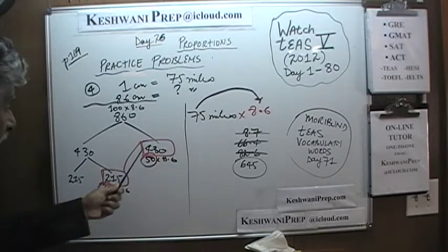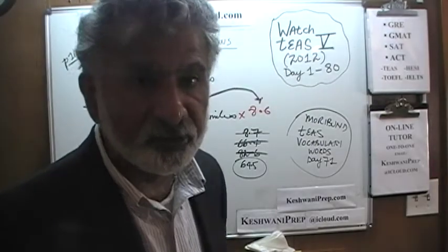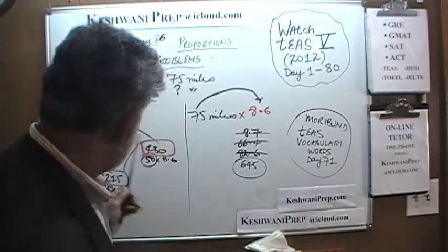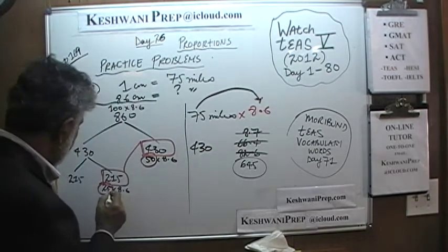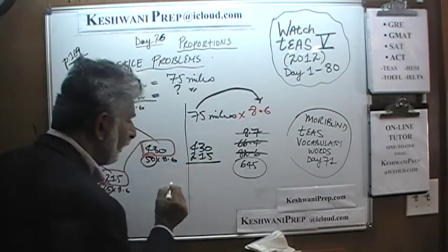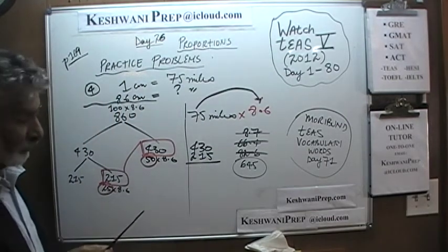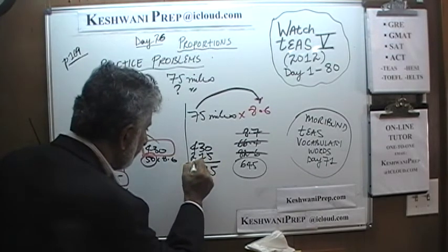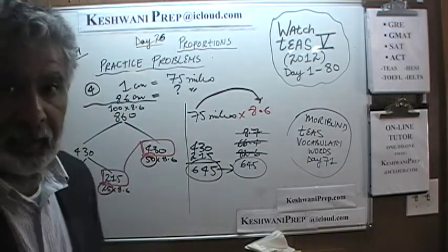I wonder what we will get when we add these two figures. The suspense is absolutely killing me. Let's find out. 430 and 215. Notice how miraculously the result lines up. 5, 3 plus 1 is 4, and 4 plus 2 is 6 — giving us 645. That was number 4.